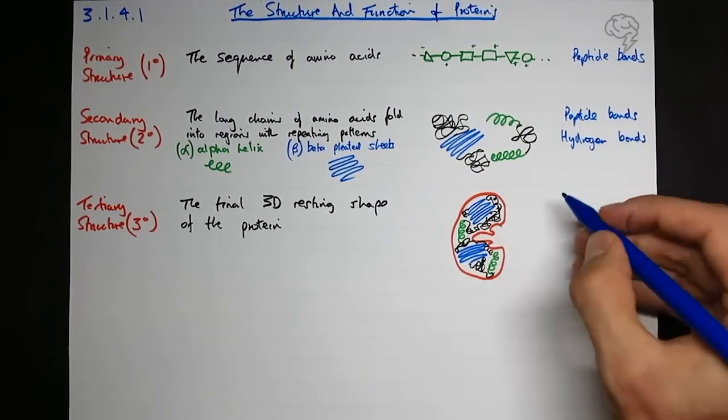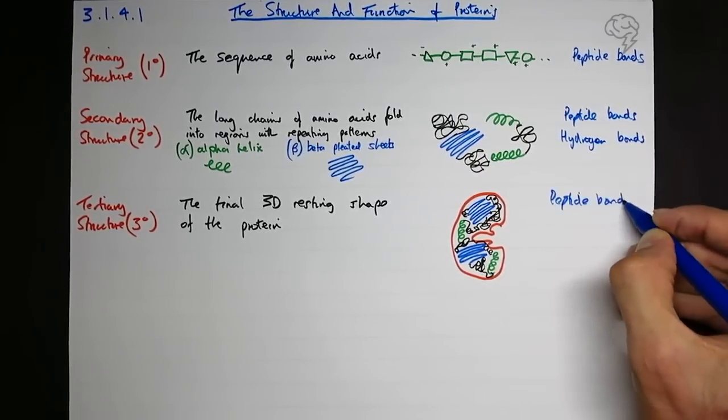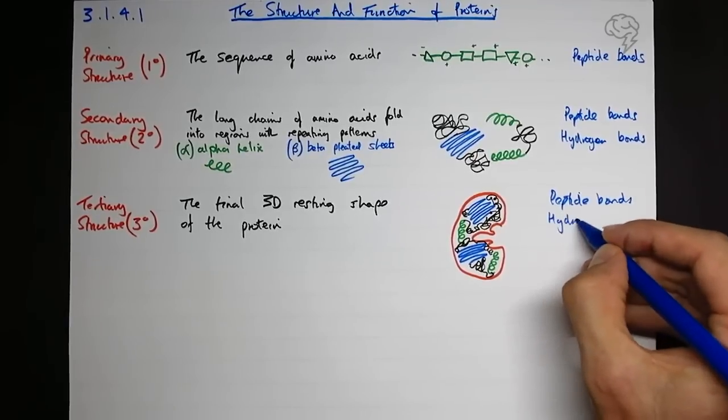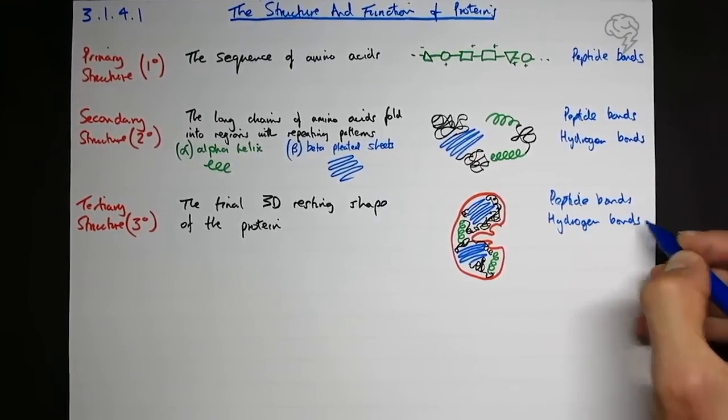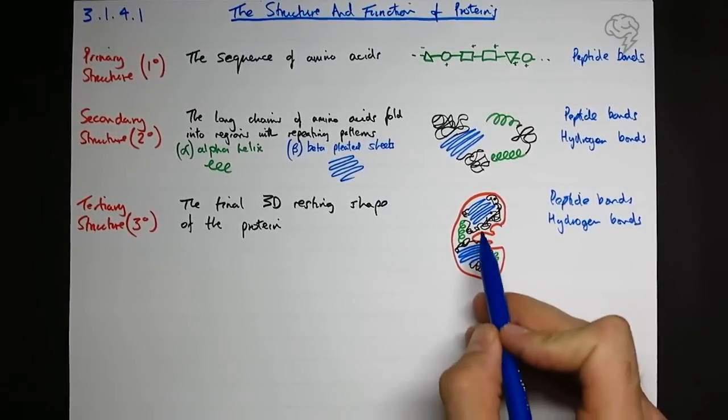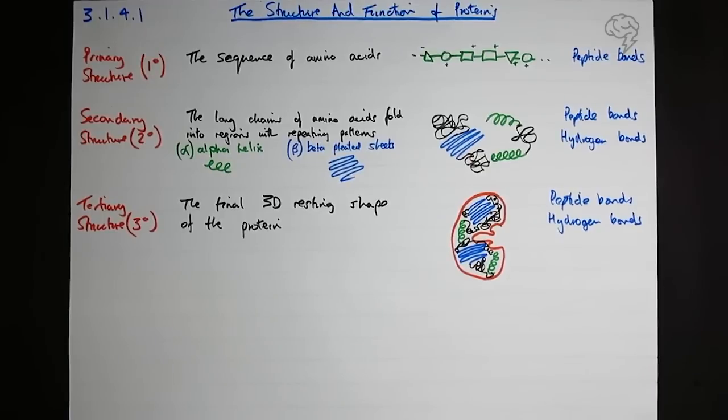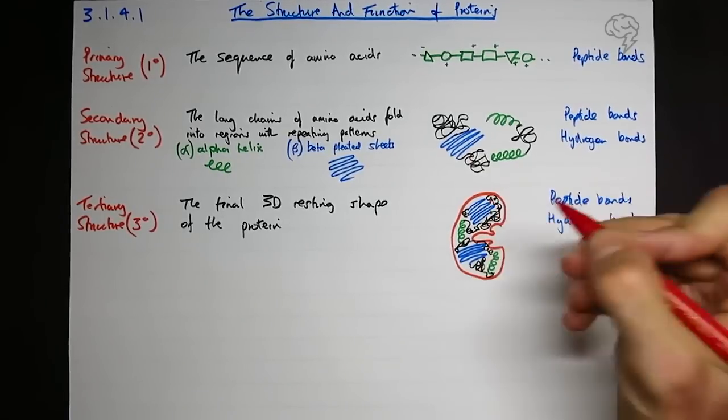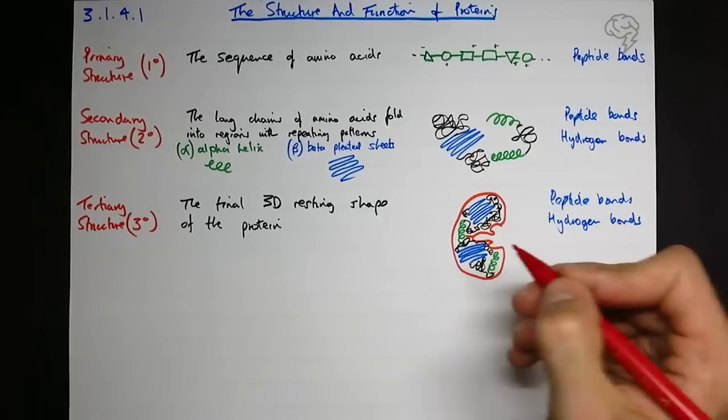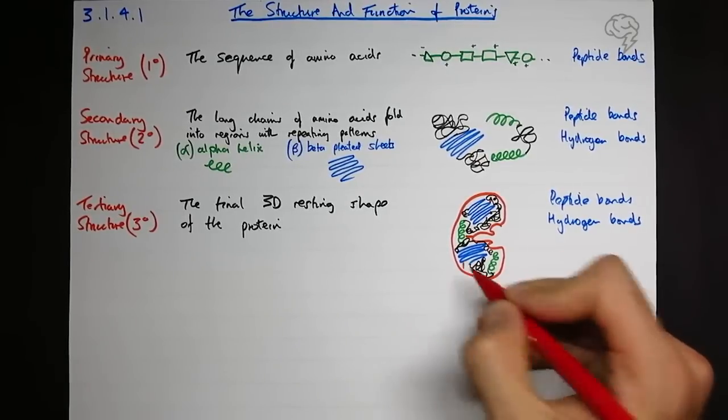So what bonds have we got? Well, we've got the primary structure so we've got peptide bonds. We've got the secondary structure so we've got hydrogen bonds. We've also got, holding these into position, we've got stronger bits and stronger bonds which might, let's say, hold that bit to this bit. We might have a bond holding this bit to this bit, maybe this bit's bonded here, maybe this bit's bonded here.